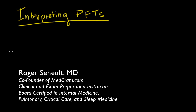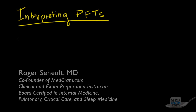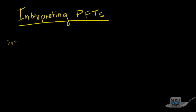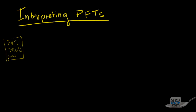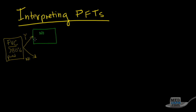Based on everything we know, we're going to show you how to interpret PFTs. The first thing you want to do is look at the FVC and see whether or not it's greater than 80% of predicted. If any FVC is greater than 80% of predicted, you can say that you have no restriction — that's the first diagnosis we can come up with right off the bat.